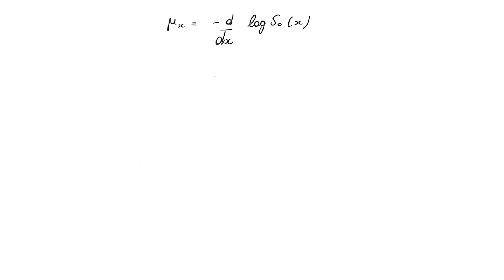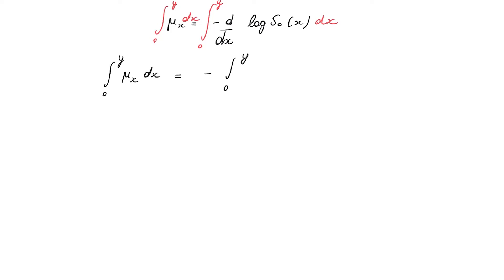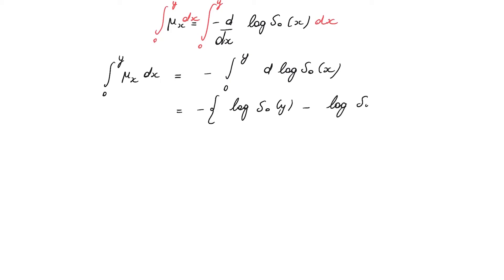If I manipulate this, I can take the integral from zero to Y with respect to X on both sides. Working out both integrals, the integral from zero to Y of μ(X) dX equals minus the integral from zero to Y of d[log S₀(X)]. Bringing the minus sign to the other side and rewriting as the logarithm of S₀(Y) minus the logarithm of S₀(0).